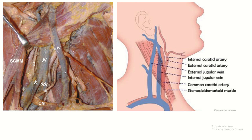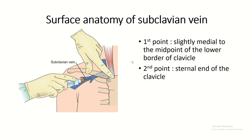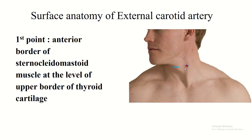The external jugular vein lies superficial to the sternocleidomastoid muscle. When you remove the sternocleidomastoid muscle, the internal jugular vein is found deep to it. Surface anatomy of the subclavian vein: first point slightly medial to the midpoint of the lower border of the clavicle; second point at the sternal end of the clavicle.